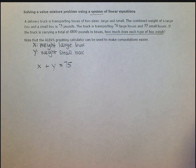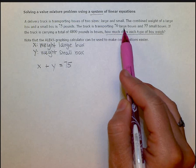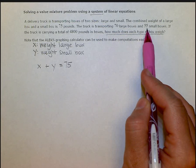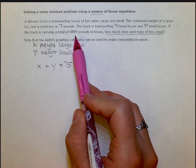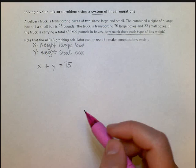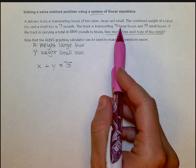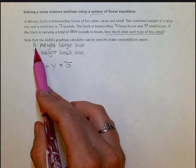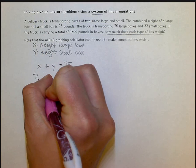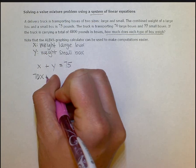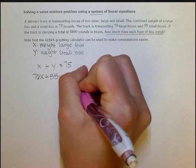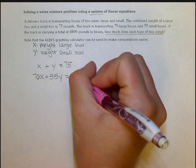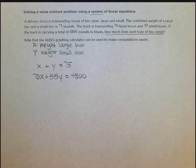The next information they give us says the truck is transporting 70 large boxes and 55 small boxes. If the truck is carrying a total of 4800 pounds in boxes, that's our next piece. So if they're carrying 70 large boxes and a large box weighs x pounds, we have 70 boxes at x pounds plus 55 boxes that weigh y pounds each. And there's a total of 4800 pounds. So we've written our two equations, so we have a system.